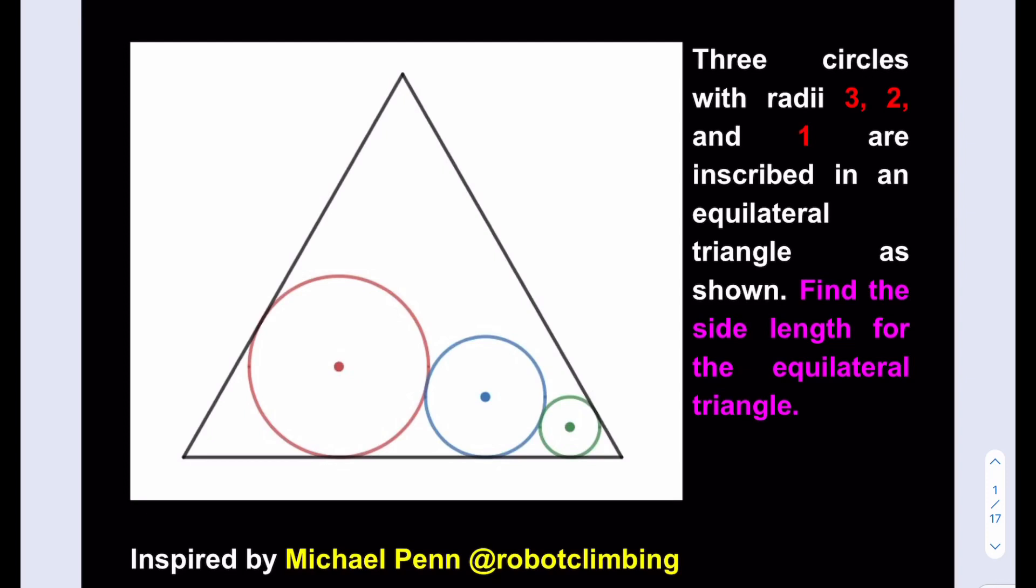Three circles with radii 3, 2, and 1 are inscribed in an equilateral triangle as shown. Find the side length for the equilateral triangle.